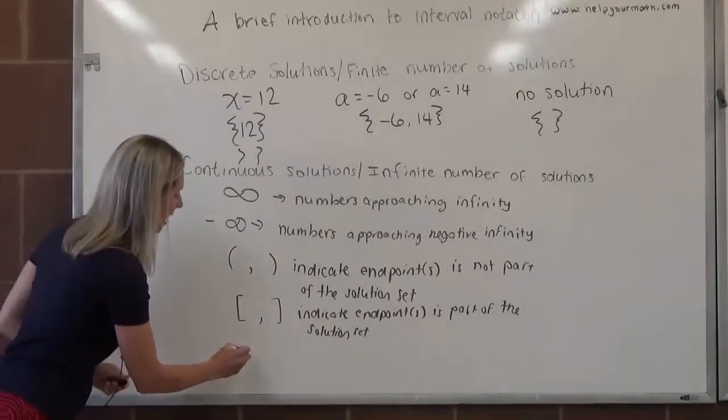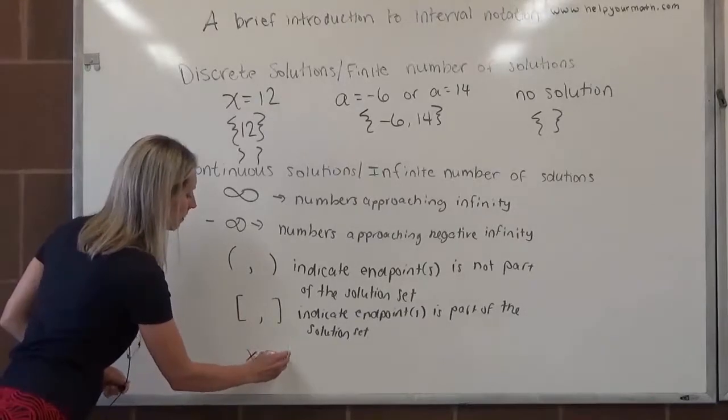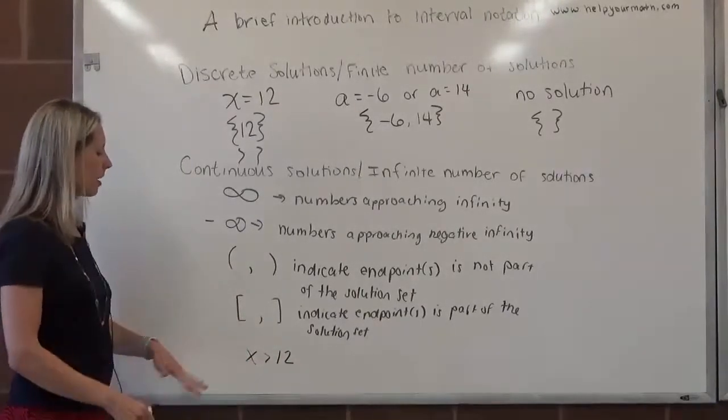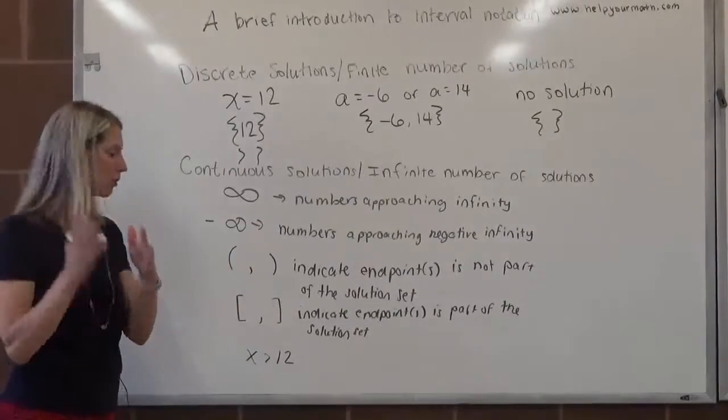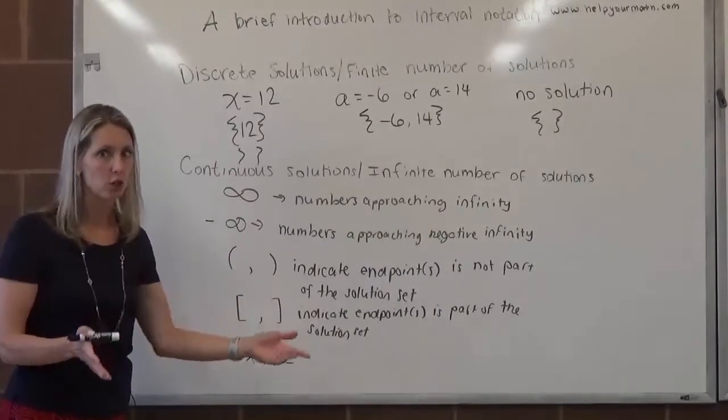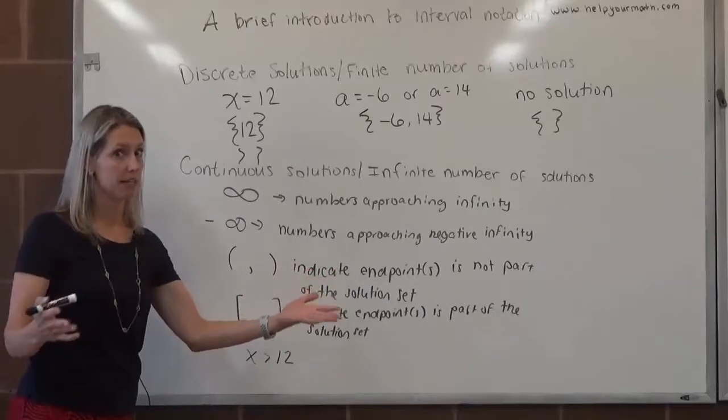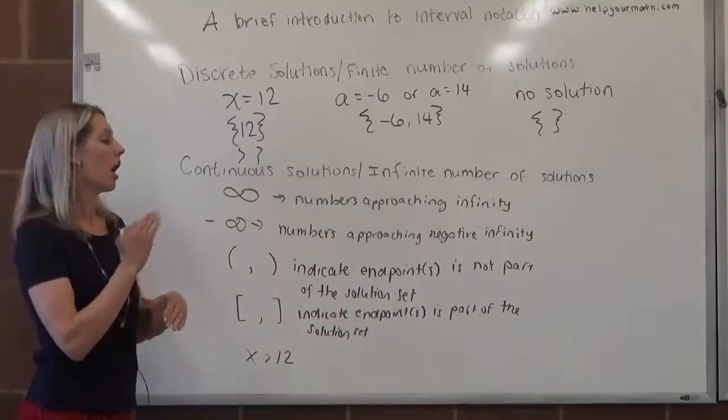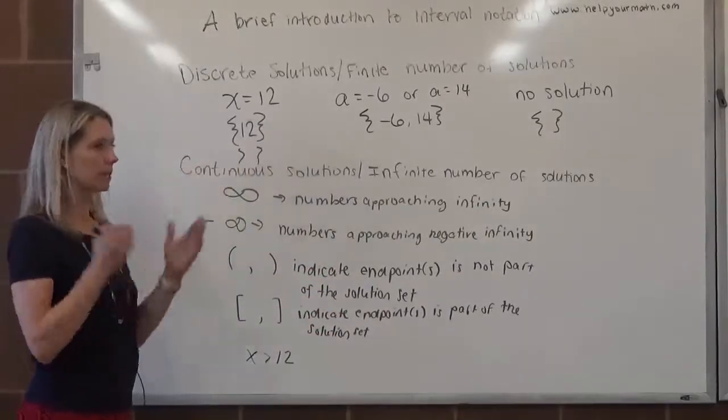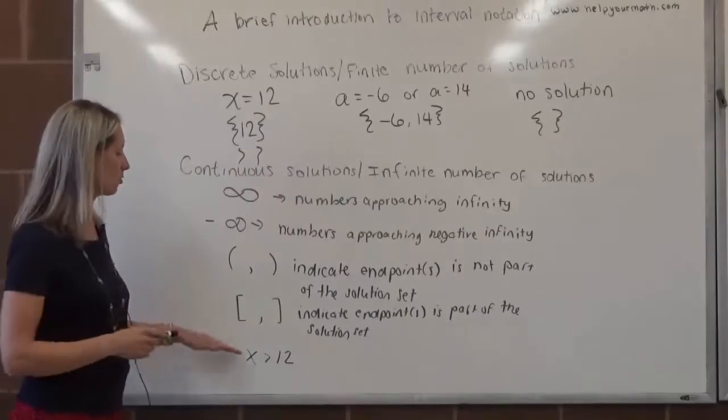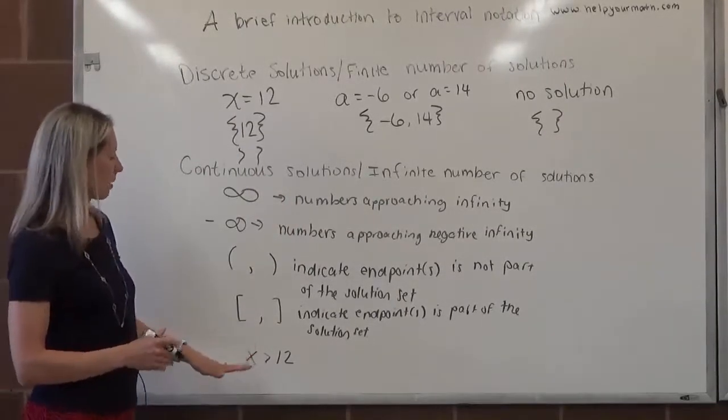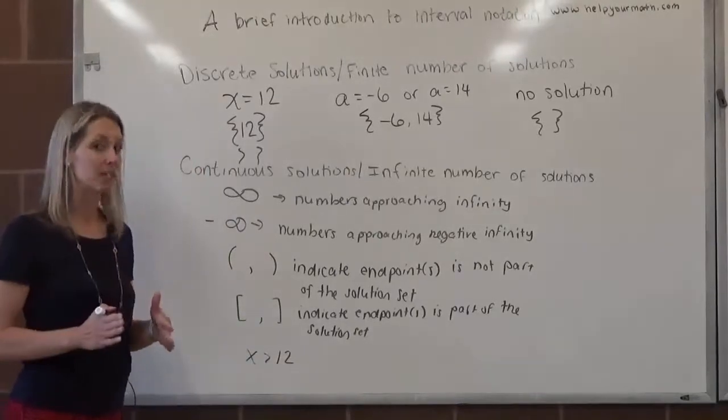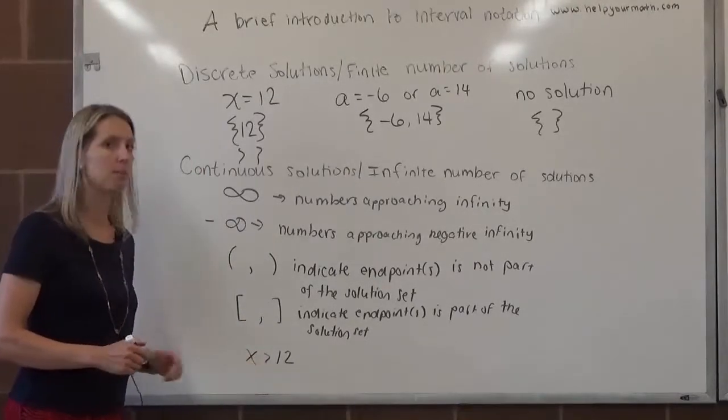For example, if we have x is greater than 12, to represent all numbers bigger than 12, there are infinitely many: 12.01, 12.02, 13, 77, a million. We can't write them all in braces because there are infinitely many solutions. The way we represent this in interval notation, as mentioned before, we go from least to greatest. For numbers bigger than 12, we would start at 12.